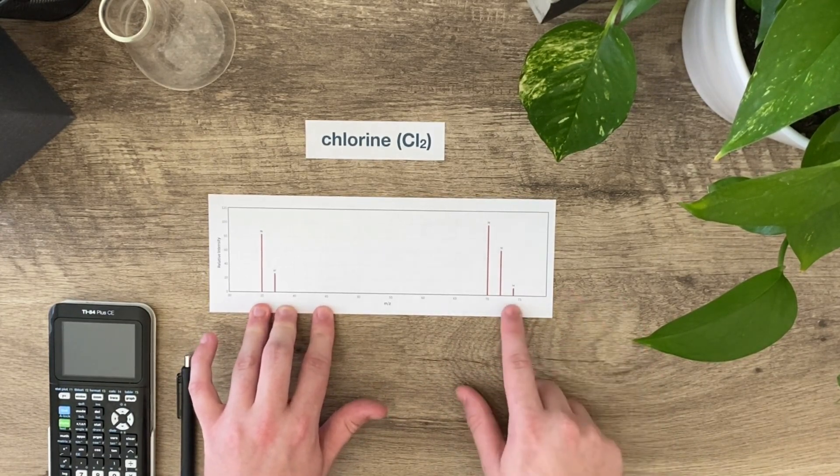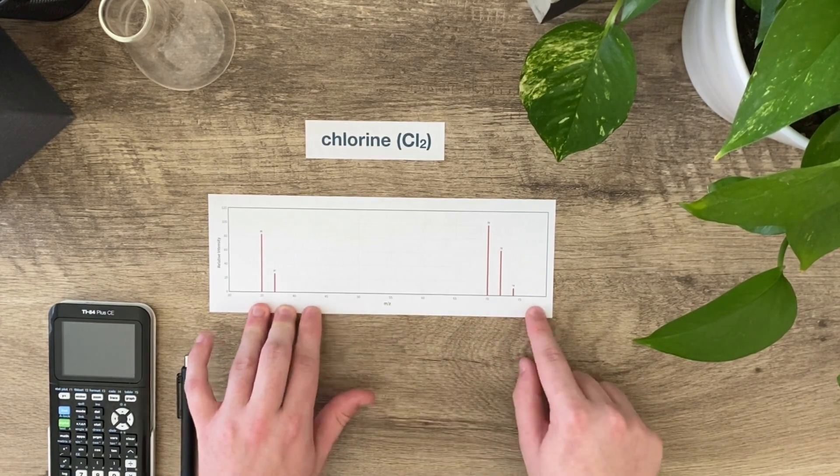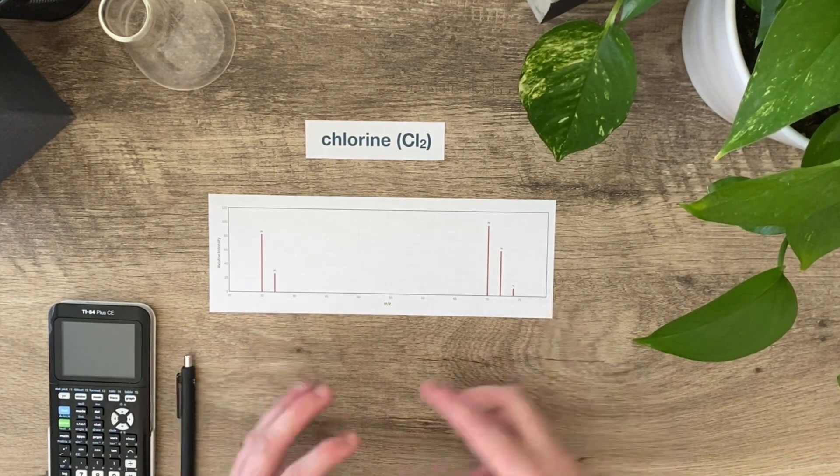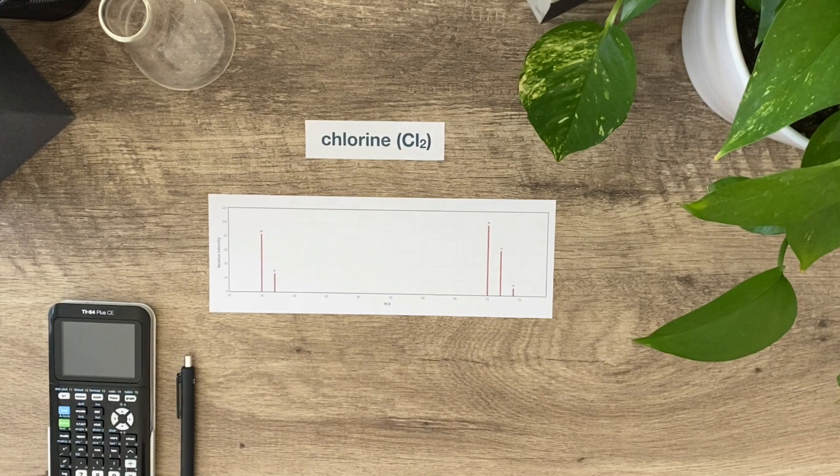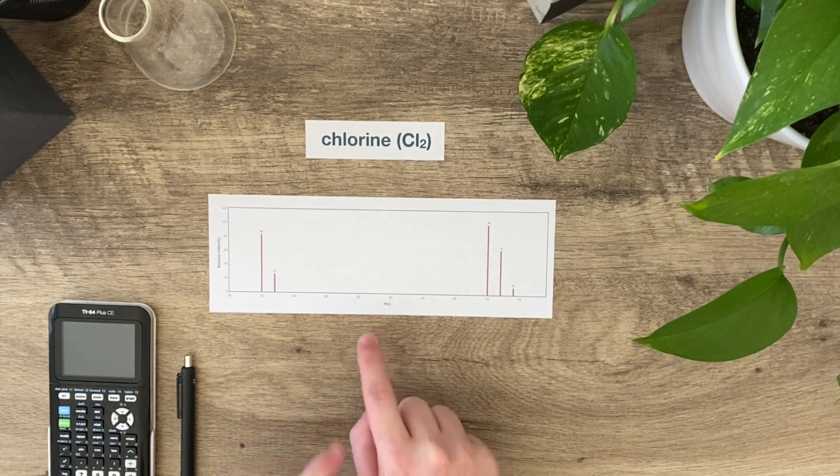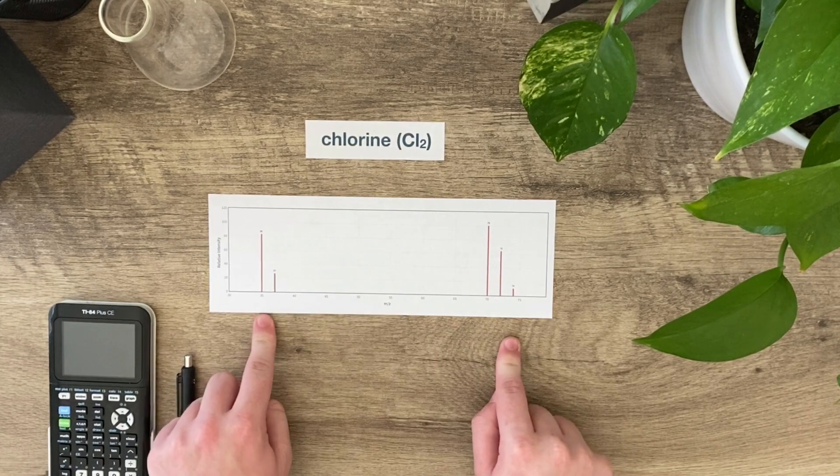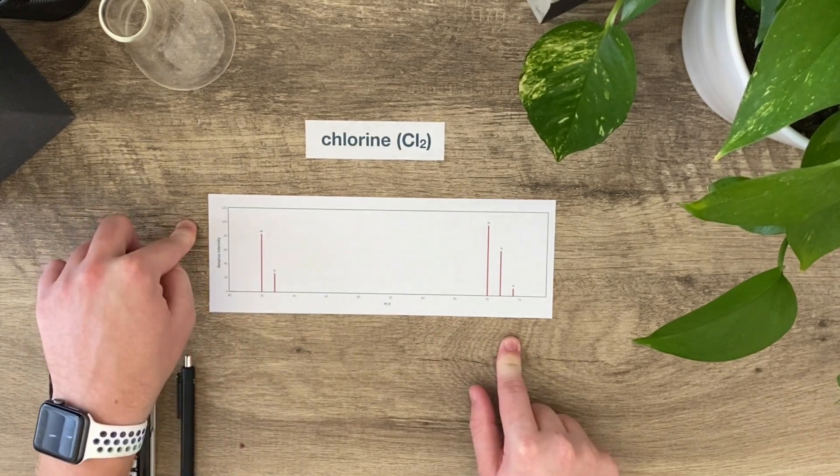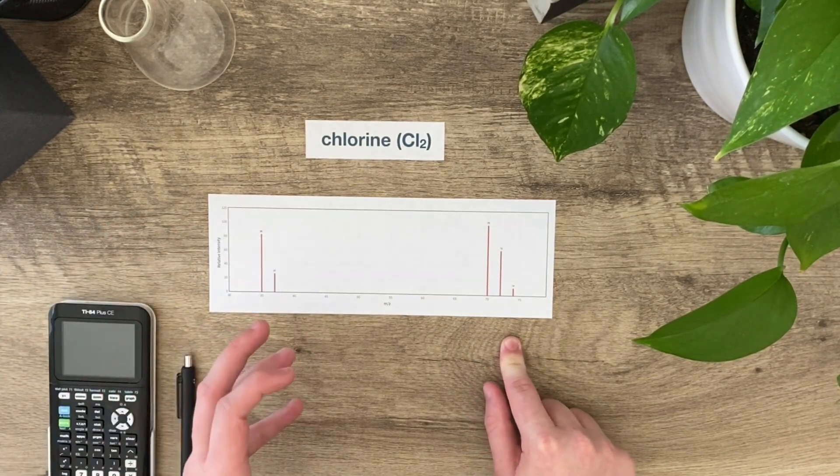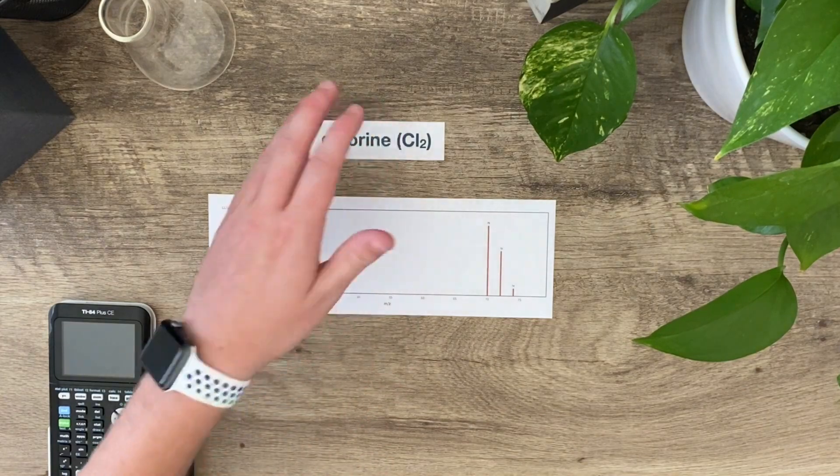We can see here based on this abundance how a sample should look if I get chlorine somewhere. Remember, m/z is mass to charge ratio, roughly the mass along the x-axis. Relative intensity is abundance, how frequent did that actually occur. Now let's take an example of how we could apply this to another mass spec.